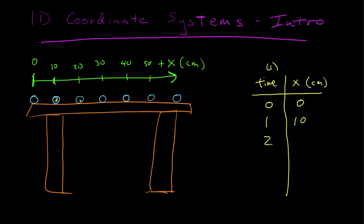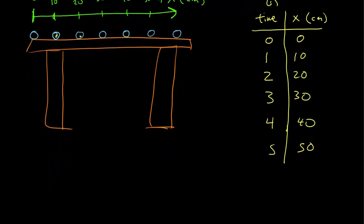At another second later it was at 20 centimeters, and we can see where this is going: at 4 seconds, 40 centimeters; at 5 seconds, 50 centimeters. So now I have a tabular representation of this event.